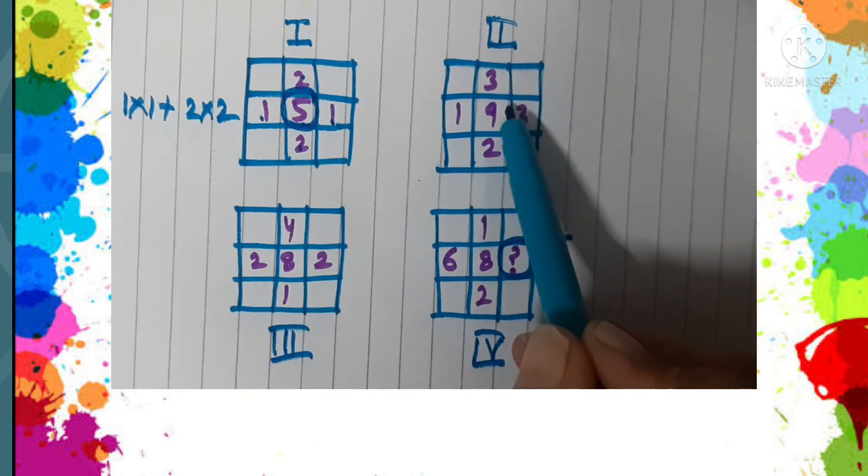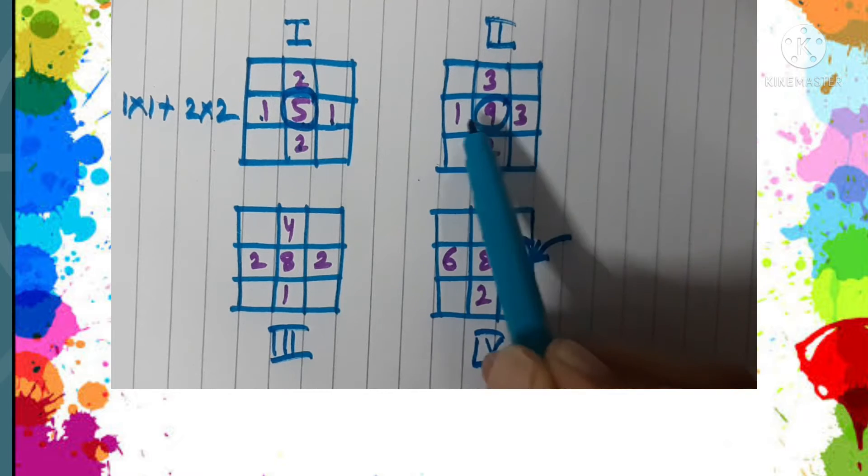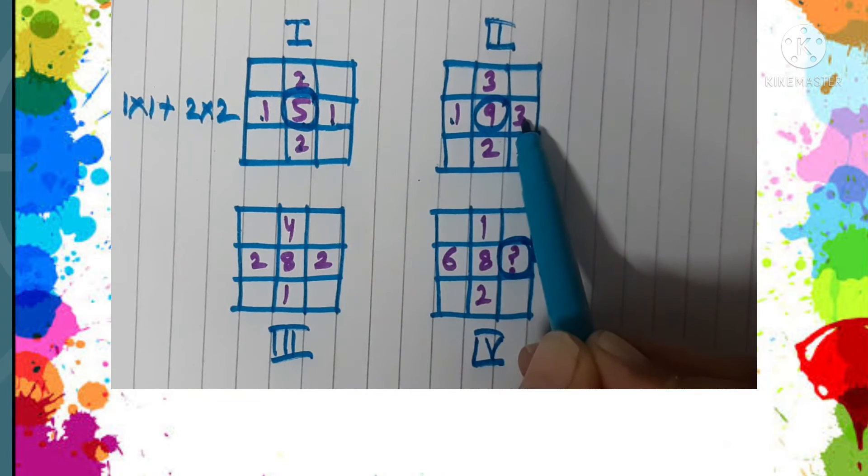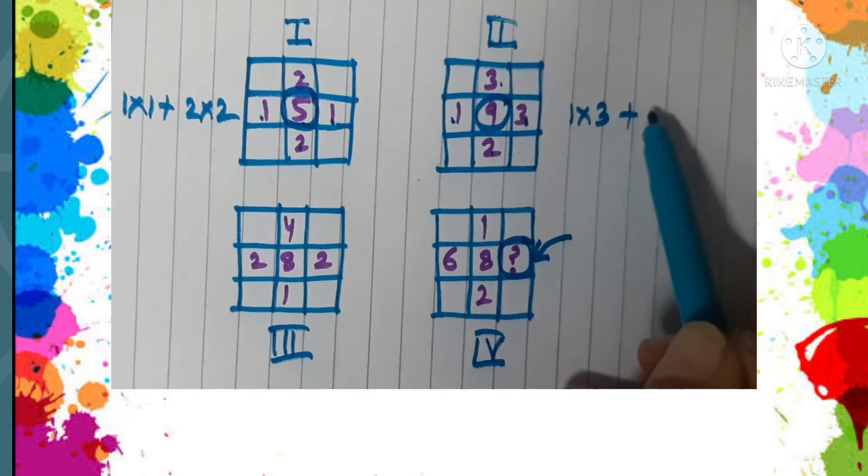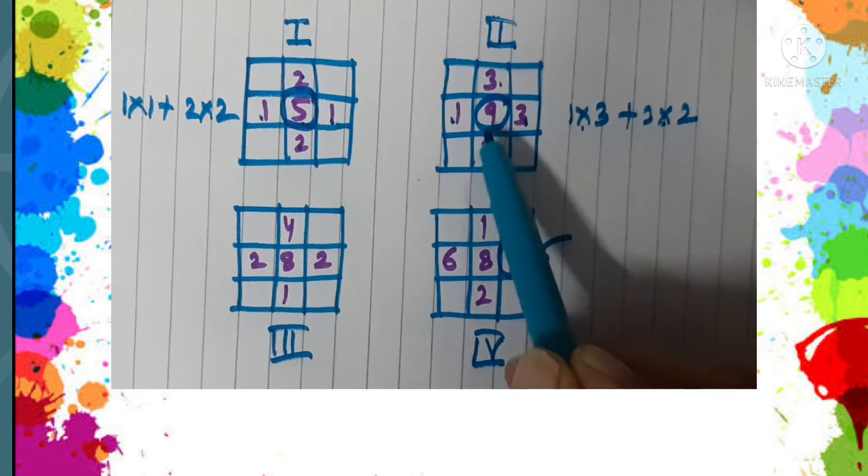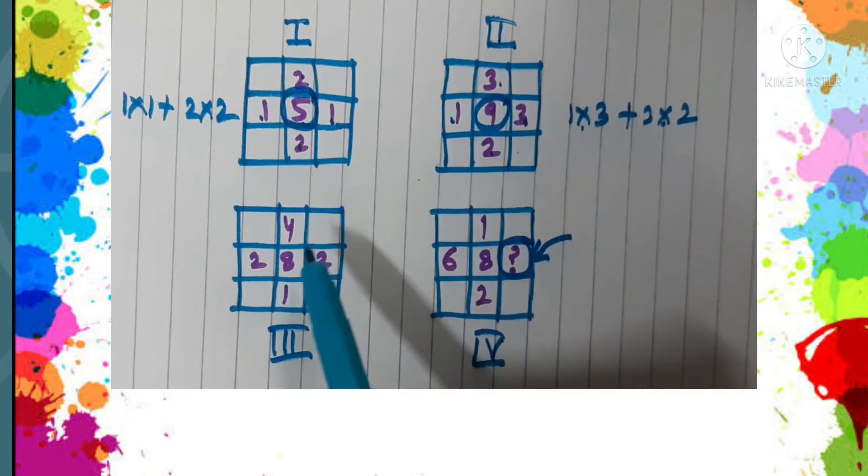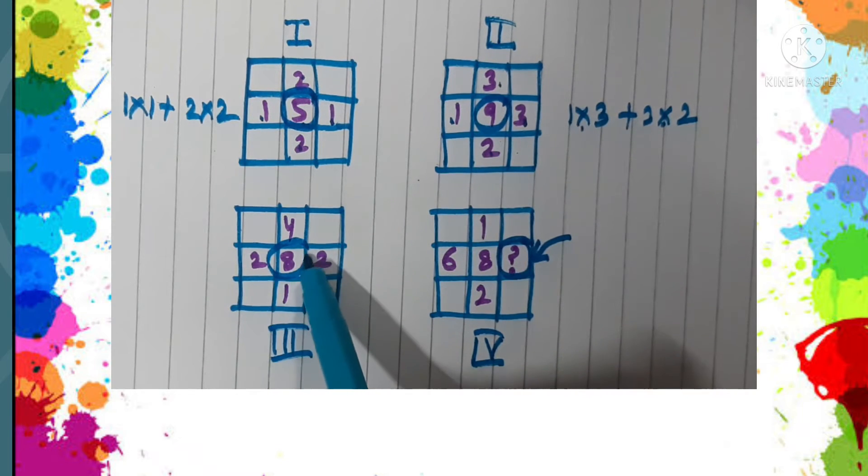Let us see box number two. How we get this center number: one into three plus three into two, six plus three gives us nine. Similarly in box number three, how do we get this eight? Two into two plus four into one.